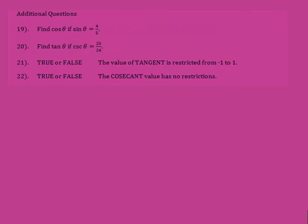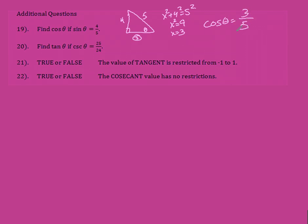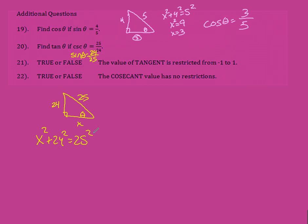For 19 and 20, just draw the triangle. If sine of an angle is 4 fifths, sine is opposite over hypotenuse — use Pythagorean theorem to find the missing side: x squared plus 4 squared equals 5 squared, giving x squared equals 9, so x equals 3. Cosine of theta is adjacent over hypotenuse, which is 3 over 5. For number 20, if cosecant is 25 over 24, that means sine of theta is 24 over 25. Find the missing side: x squared plus 24 squared equals 25 squared, so x squared equals 49 and x equals 7. Tangent of theta is opposite over adjacent, which is 24 over 7.